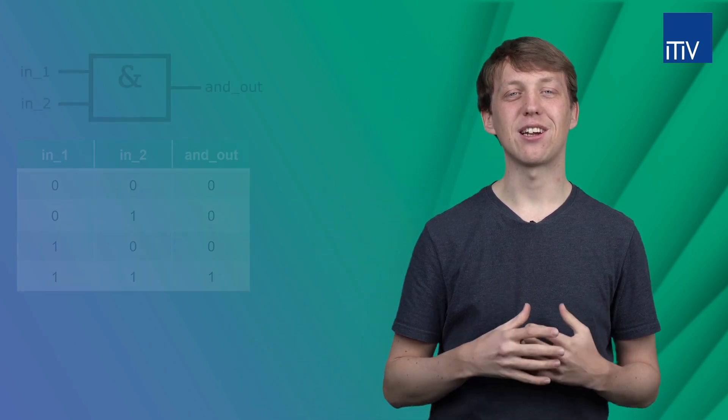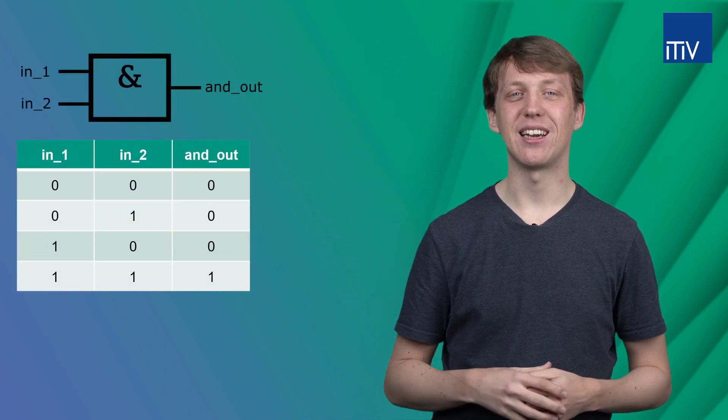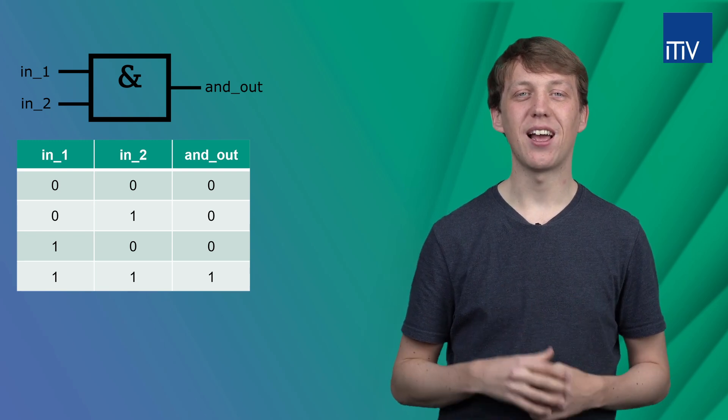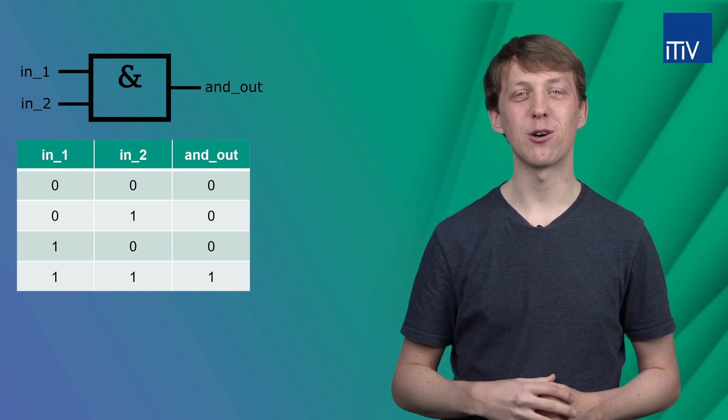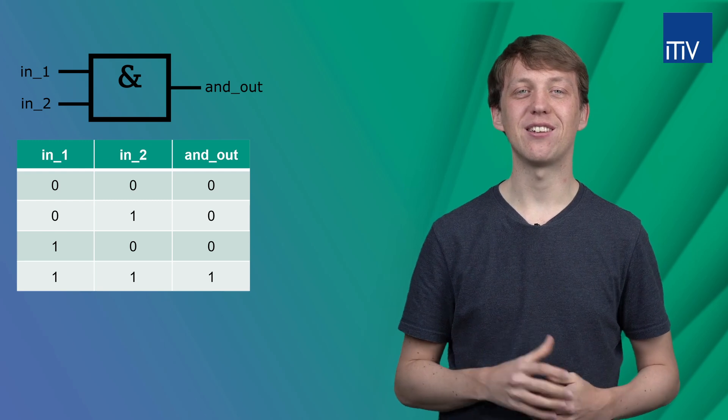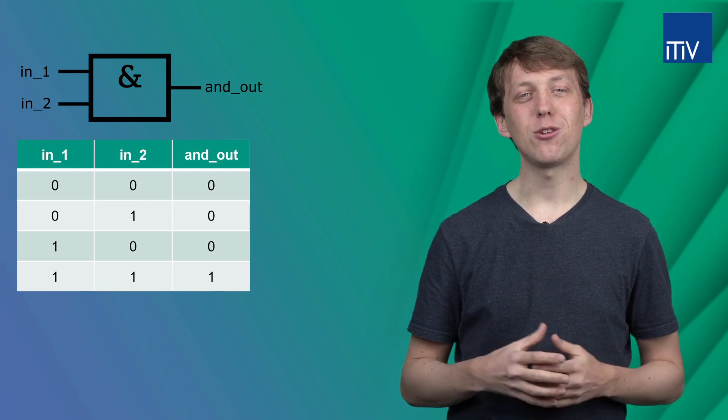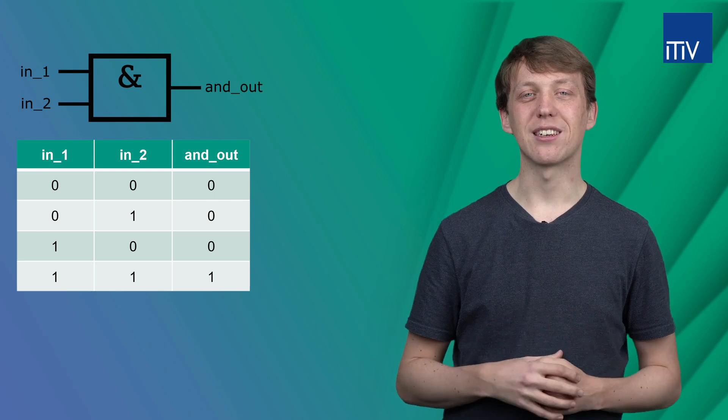Let's design a standard AND gate having two inputs, in_1 and in_2, and one output called and_out. Below you can also see the truth table of such an AND gate.